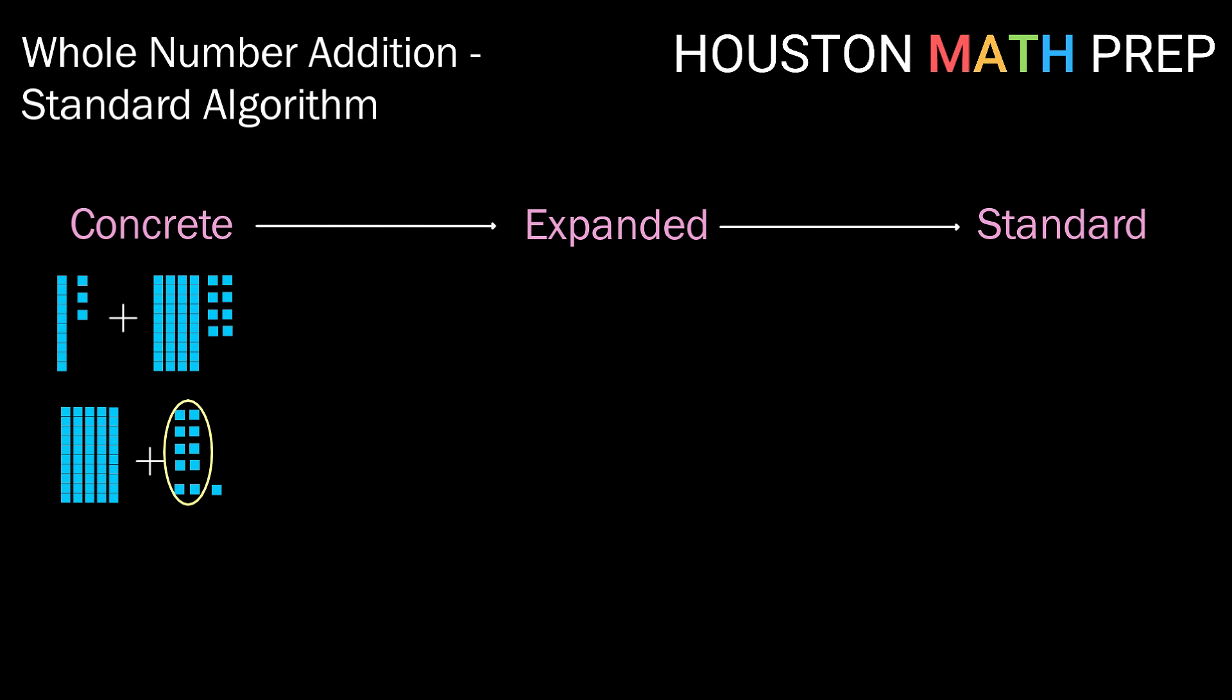Once we've done that we notice that we actually have 10 1 blocks that we could trade in for a 10 block. So making that trade we notice that in the end we have 6 10 blocks or 60 plus 1 1 block. So we get 13 plus 48 in a concrete way is 61.